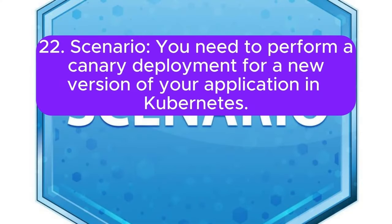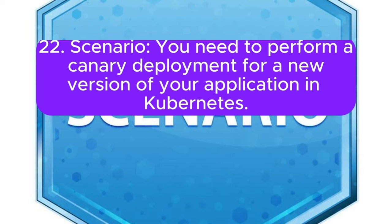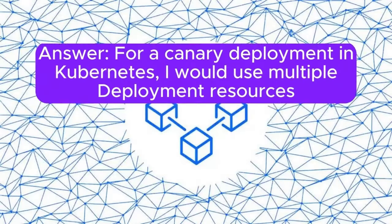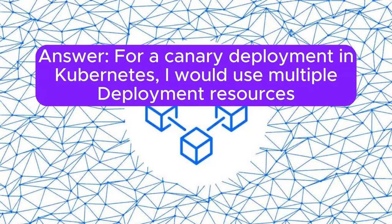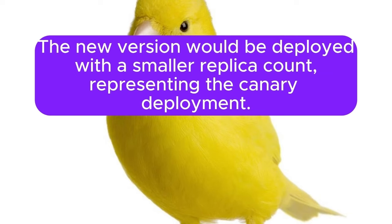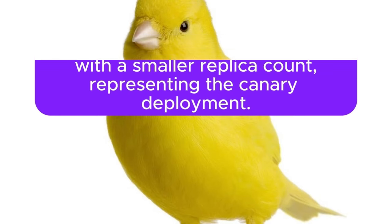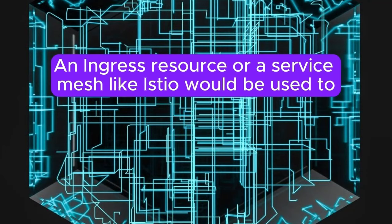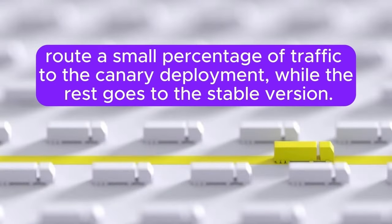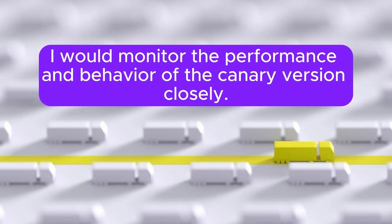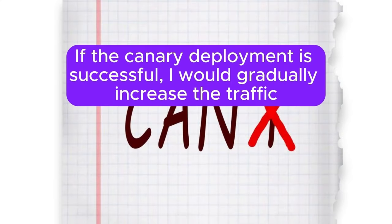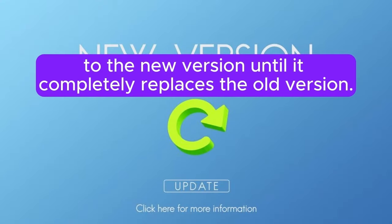Scenario 22: You need to perform a canary deployment for a new version of your application in Kubernetes. How would you set up and manage this deployment? Answer: For a canary deployment in Kubernetes, I would use multiple deployment resources to run different versions of the application simultaneously. The new version would be deployed with a smaller replica count, representing the canary deployment. An ingress resource or a service mesh like Istio would be used to route a small percentage of traffic to the canary deployment while the rest goes to the stable version. I would monitor the performance closely and, if successful, gradually increase traffic to the new version until it completely replaces the old version.